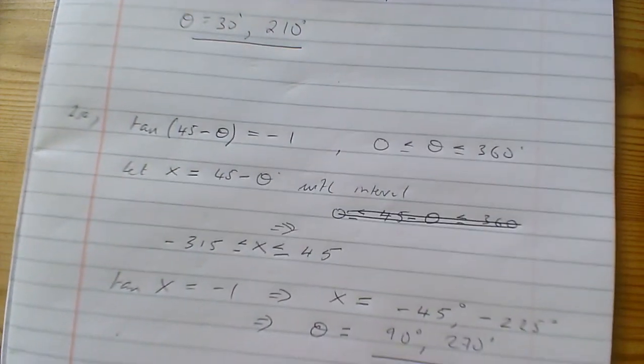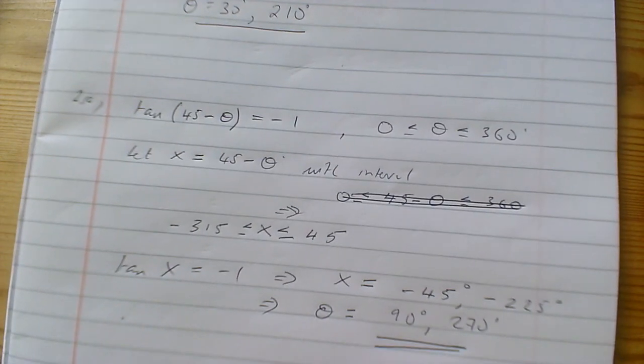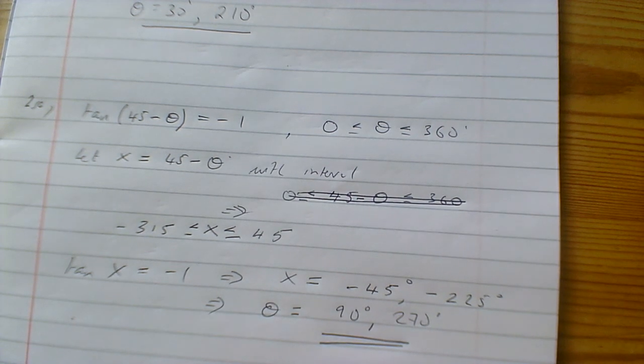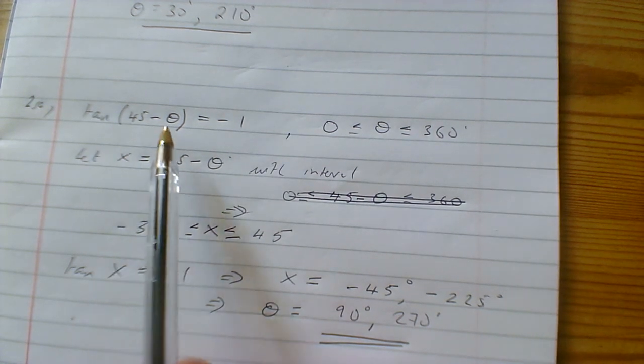Now I'm going through the question from exercise 5e. This is question 2a, the one I may have confused you with yesterday: tan(45 - θ) = -1.